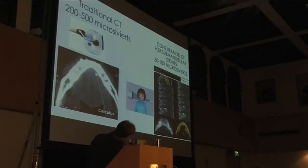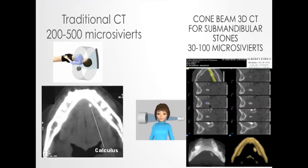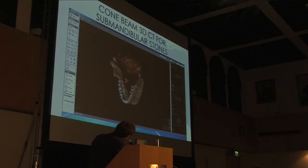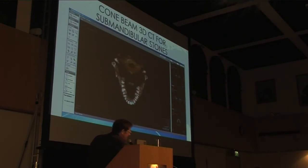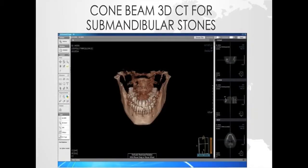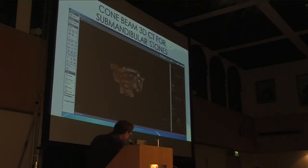But sometimes you cannot find stones and so we need a traditional CT scan, or now I prefer cone-beam 3D CT in order to reduce the dose of radiation. Here you can see a case of submandibular stones that can be adequately located into the oral floor, and you can adequately define the exact position, shape, and size of the stone. So especially for submandibular stones, it's a good technique, and as a maxillofacial surgeon you perform cone-beam CT for everything you do.